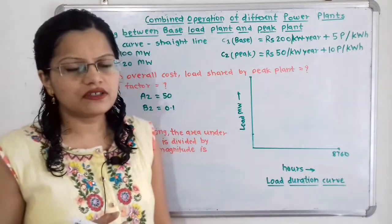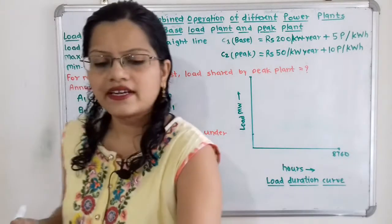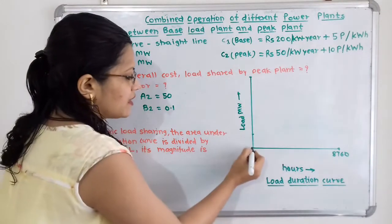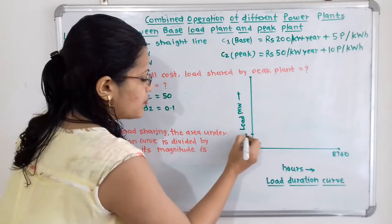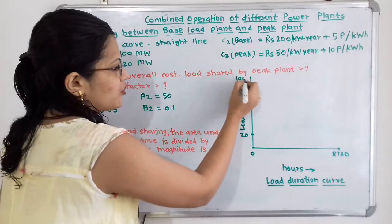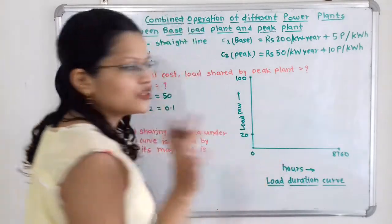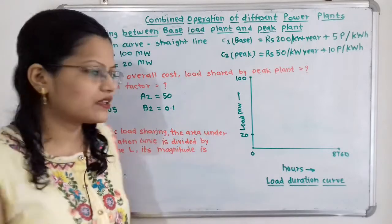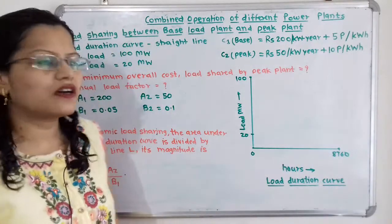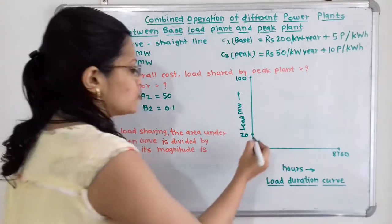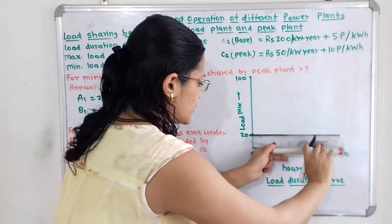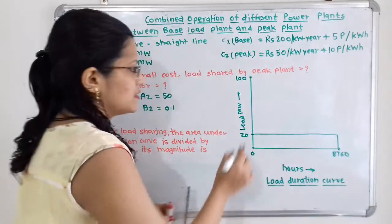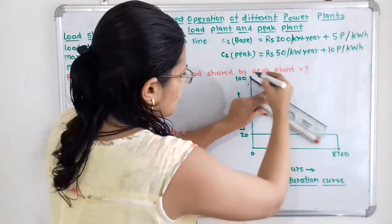Now we will draw the load duration curve. As per the given data it is in the form of a straight line and varies from 100 MW to 20 MW. We will draw a vertical axis starting from 0, with 20 MW and 100 MW marked. On the horizontal axis we take the duration in number of hours. Since installed capacity is for one year, the number of hours in one year is 8760. The load duration curve varies between 100 MW and 20 MW, so we draw a horizontal line passing through 20 MW at a magnitude equal to 8760 hours, and complete the straight-line load duration curve.